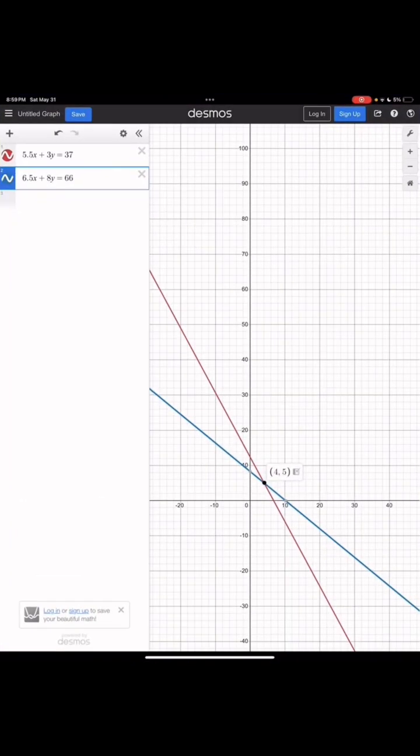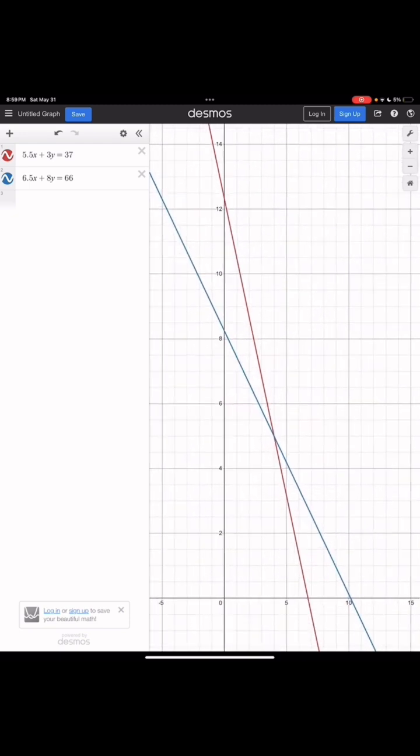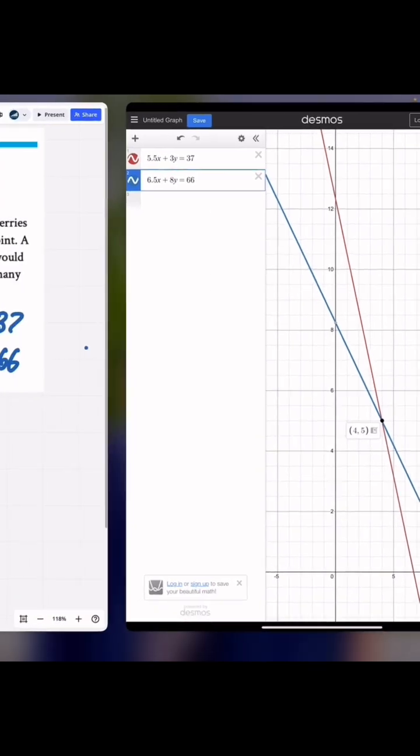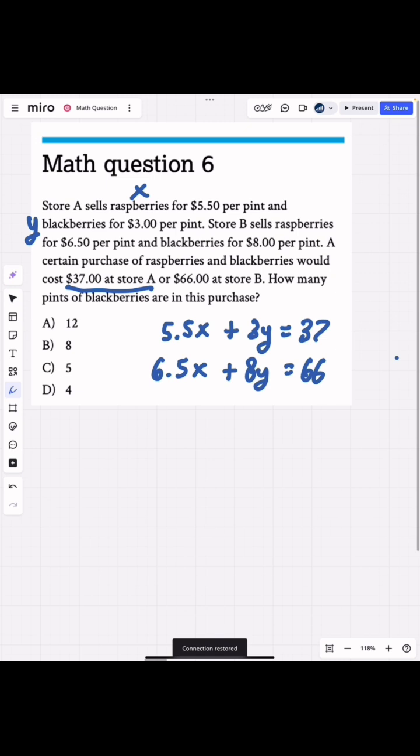On Desmos we have 5.5x plus 3y equals 37 and 6.5x plus 8y equals 66. And here we go. If we zoom in a little bit, we see that these meet at this point here: 4, 5. In other words, 4 pints of raspberries and 5 pints of blackberries.